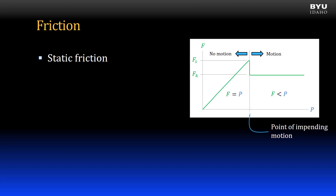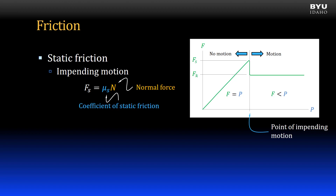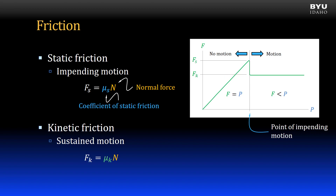Let's compare static and kinetic friction. What we call the static friction force will be the maximum friction force developed prior to motion, or the friction force at the point of impending motion. I write it as F sub s equal to the coefficient of static friction times the normal force. Kinetic friction is the friction force that develops when the object is in sustained motion, written as F sub k equal to the coefficient of kinetic friction times the normal force.